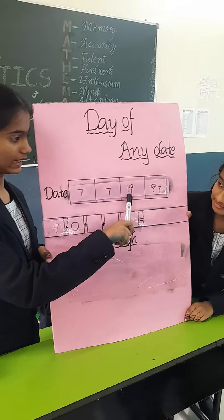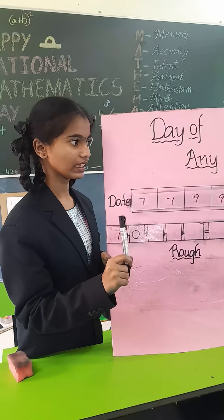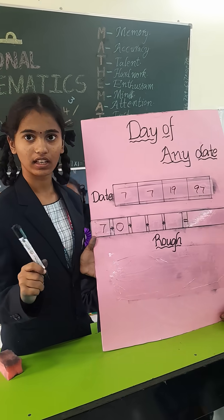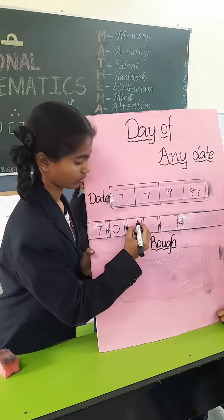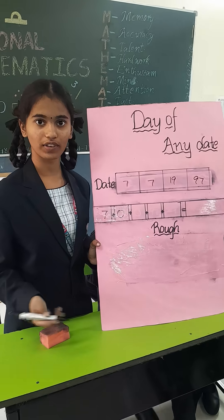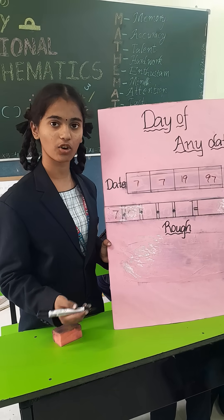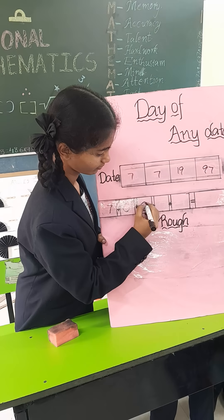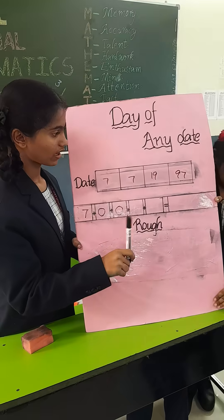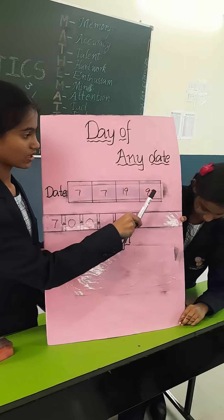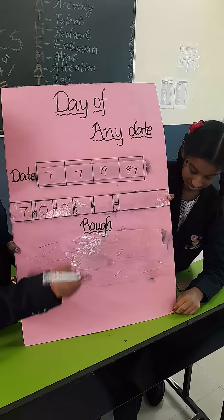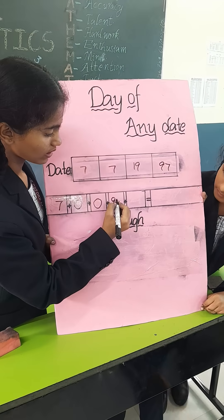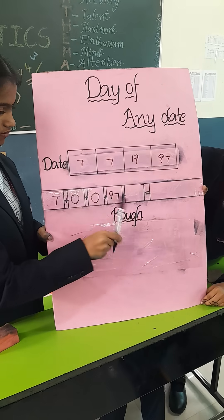Next, 19 — so 1900 means 0. We have to take the century code. The 19th century code is 0. And 97 — the starting and ending digits are the same, so we write 97.